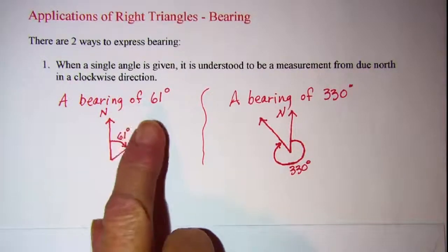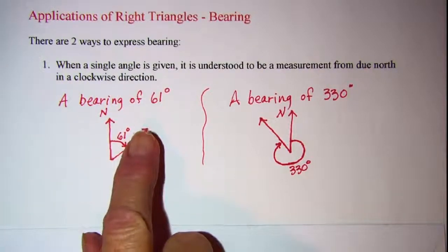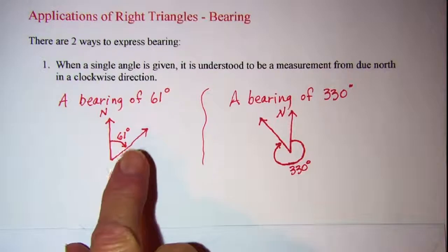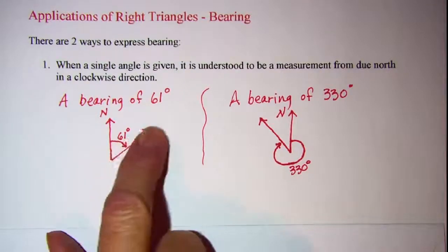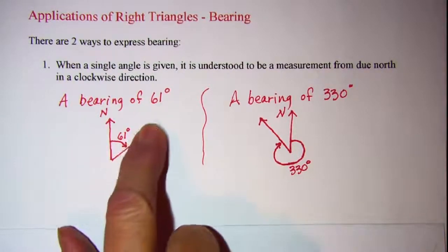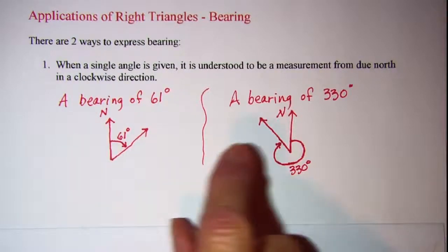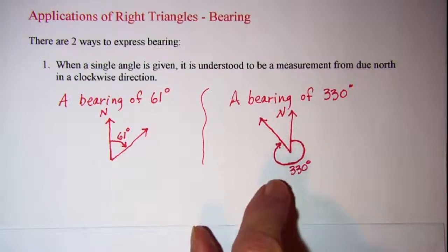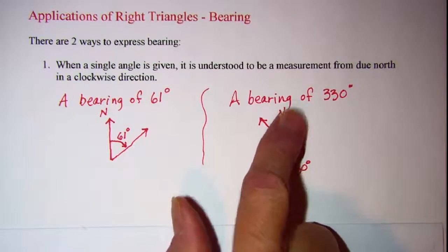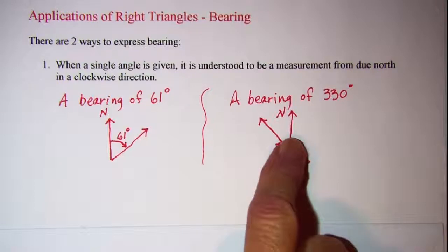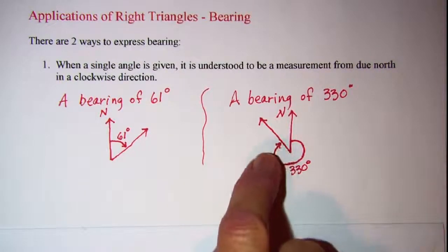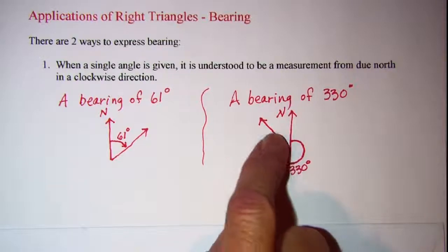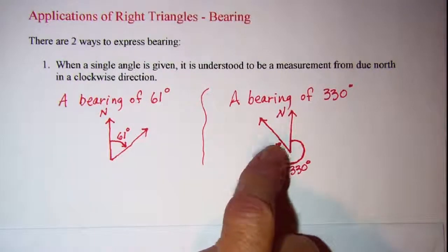When a single angle is given, it's understood to be a measurement from due north in a clockwise direction. So a bearing of 61 degrees would be in this direction. A bearing of 330 degrees — again you need your due north — and 330 degrees is almost a complete revolution, so that bearing would be in this direction.